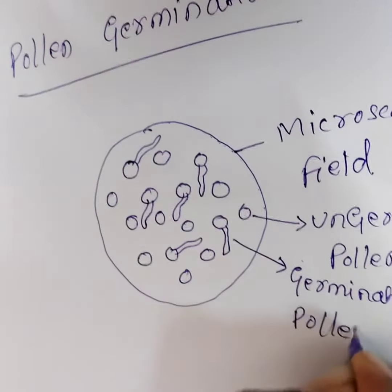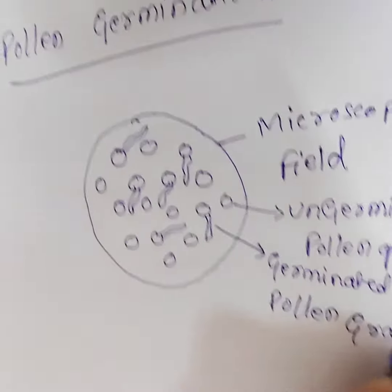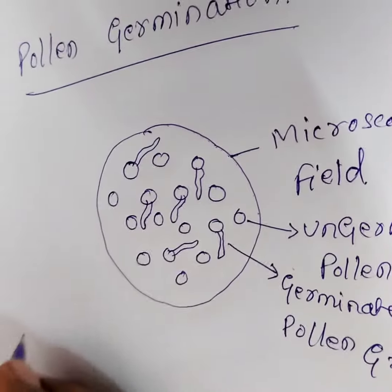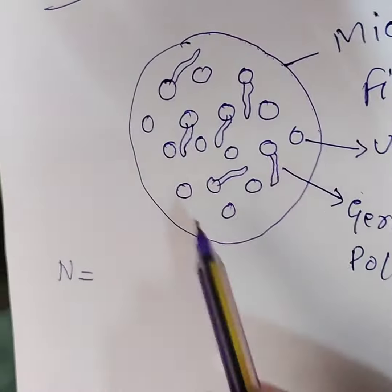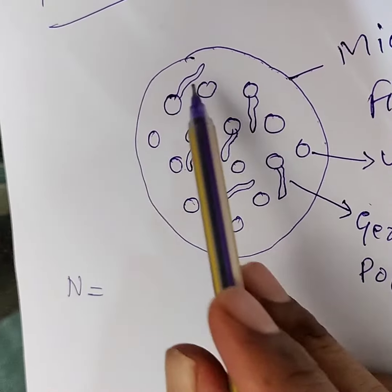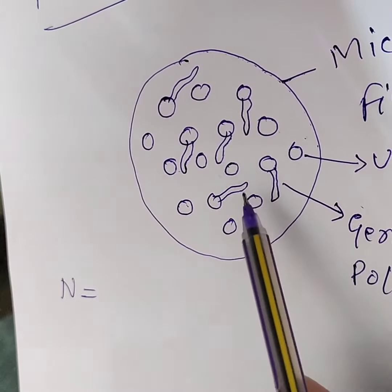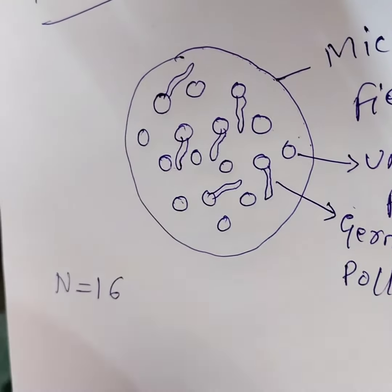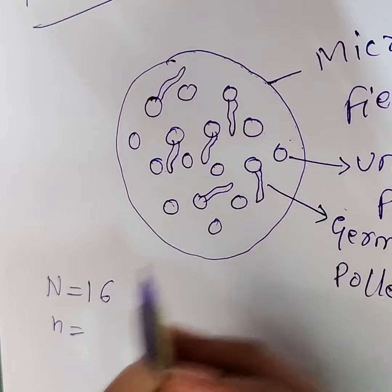Great. Germinated pollen — great. So, for example, in this case, the total number of pollen grains is 1, 2, 3, 4, 5, 6, 7, 8, 9, 10, 11, 12, 13, 14, 15, 16. Capital N is 16. Small n is 6.